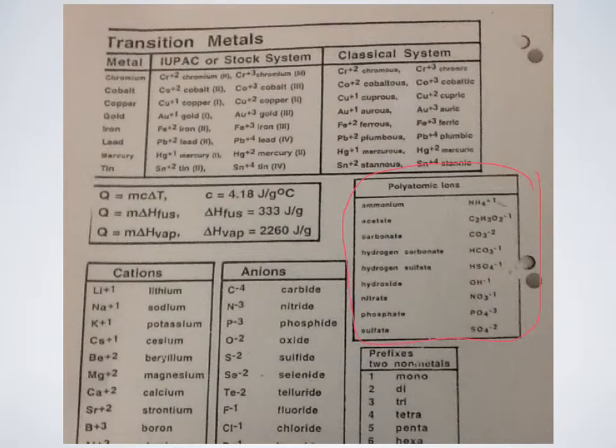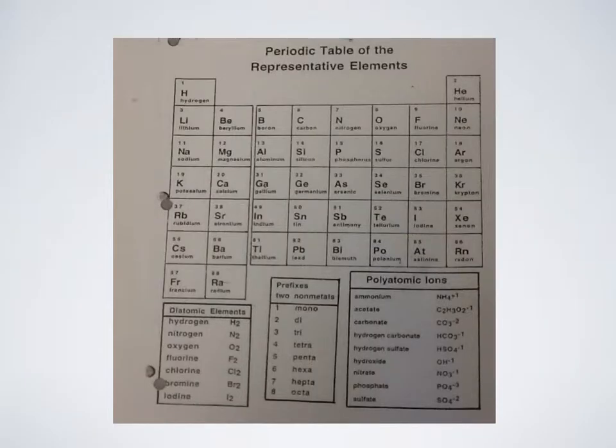We also have our cations which are our metals that are right down here. You can find them on the other side with our polyatomics here, and our metals would be our lithium and all these would be metals that would be considered metals, but really only looking at these ones.